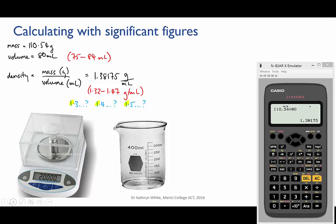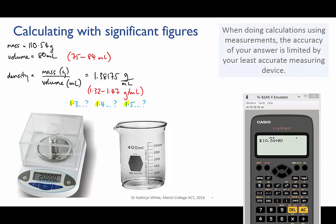So this leads me to an important point. When you're doing calculations on measurements, you're limited by the accuracy of your least accurate measuring device, which in this case was the beaker. And a second important point,